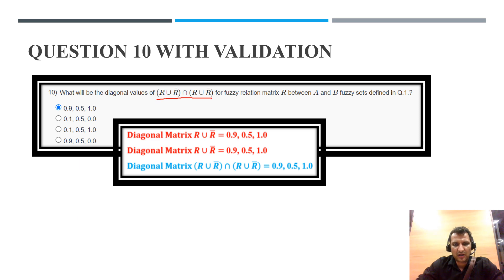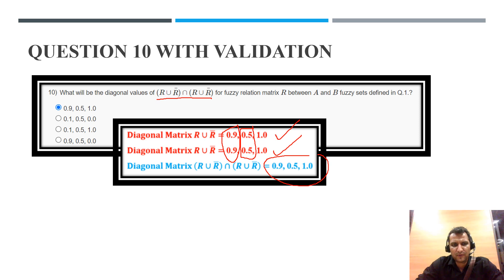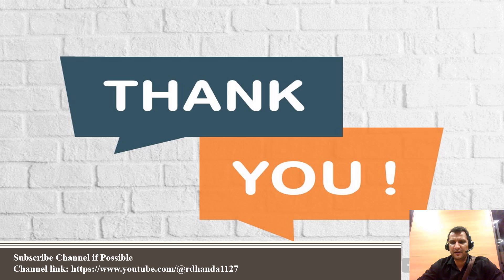Question 10: (R union R̄) intersection (R union R̄). R union R̄ and R union R̄ are the same, so we take the intersection — the minimum. Minimum of 0.9 and 0.9 is 0.9; minimum of 0.5 and 0.5 is 0.5; minimum of 1.0 and 1.0 is 1.0. Therefore the correct answer is 0.9, 0.5, 1.0 — option A is the correct one.